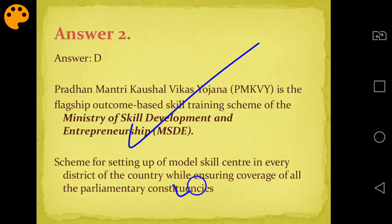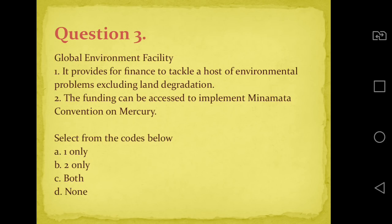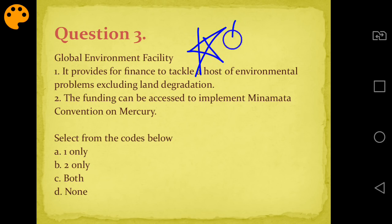Therefore D is the answer - neither statement is correct. One skill center per district, not per state, because one per state cannot bear the population load. So D will be the answer for this.